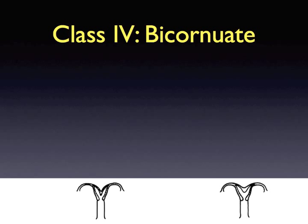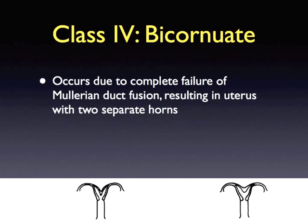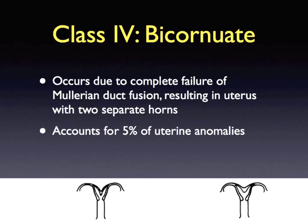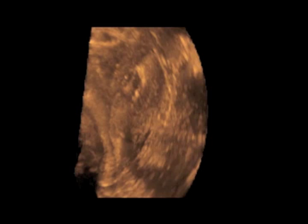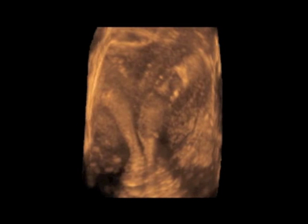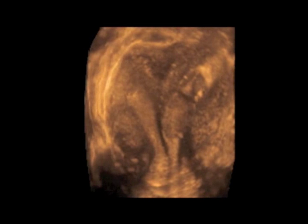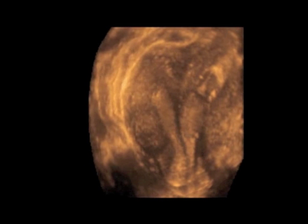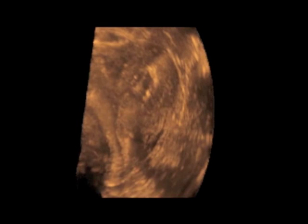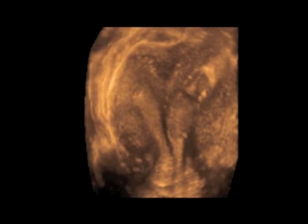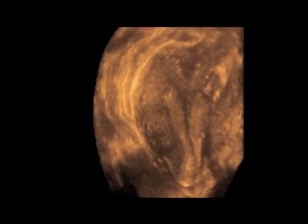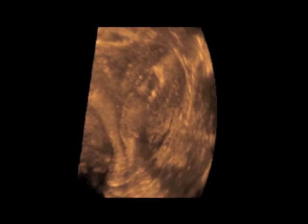A bicornuate uterus occurs secondary to complete failure of Müllerian duct fusion, resulting in a uterus with two separate horns — this is called a class 4 uterine anomaly. This anomaly occurs in 5% of uterine malformations. The bicornuate shape is formed by an intervening myometrium extending from the fundus of the uterus to the cervix, accompanied by a fundal cleft. The cleft must have a depth of greater than 1 cm, measured by 3D ultrasound, for the diagnosis of a bicornuate uterus to be made.